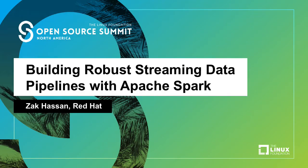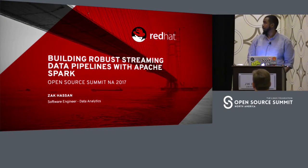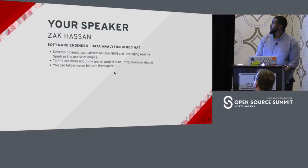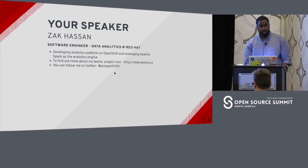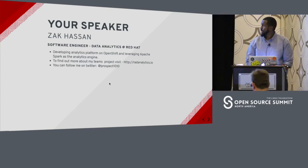My name is Zach Hassan. I work at Red Hat as an engineer on the data analytics platform. The project I work on is called Rad Analytics I.O. We use Apache Spark to power our analytics engine, and today I'm going to be talking about how you can use Apache Spark to build data pipelines.